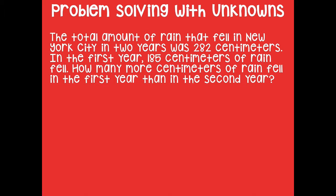Here's our first question: the total amount of rain that fell in New York City in two years was 282 centimeters. In the first year, 185 centimeters of rain fell. How many more centimeters of rain fell in the first year than in the second year? We're trying to find out how many more centimeters fell in the first year — but the problem didn't tell us how many fell in the second year, so this is a two-step problem.